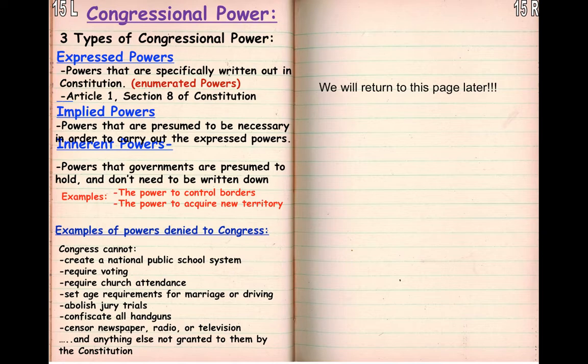Powers that are denied to Congress include, but are not limited to, all of these different things. They cannot create a national public school system — that is given to the states. They cannot require voting, require church attendance, so on and so forth.